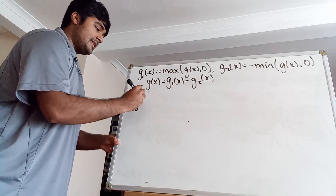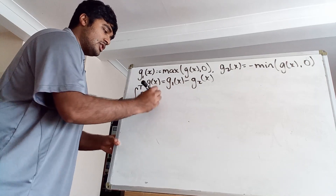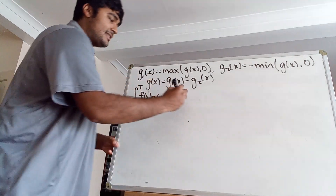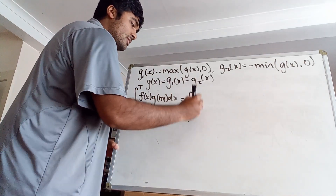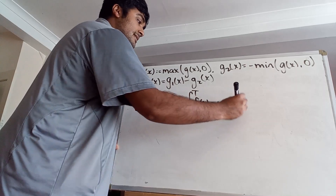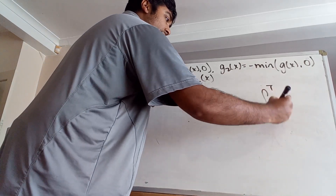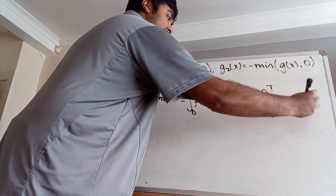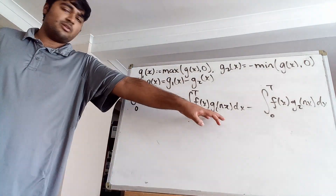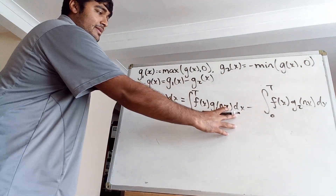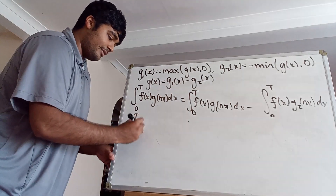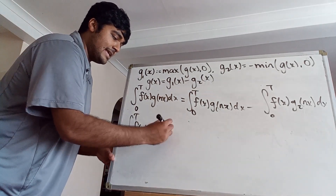What we have is the integral from 0 to t of f(x) g(nx) dx, and we're taking the limit of this. By linearity of the integral, this is going to be the integral from 0 to t of f(x) g1(nx) dx, minus the integral from 0 to t of f(x) g2(nx) dx. For now, I'm just going to focus on g1 and work with that integral.